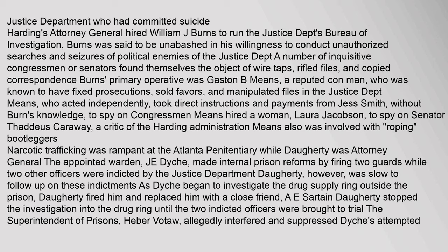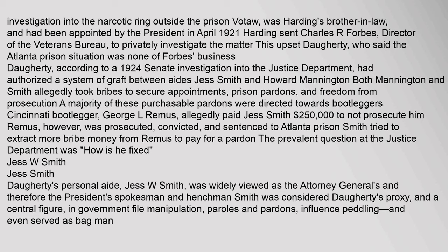Daugherty stopped the investigation into the drug ring until the two indicted officers were brought to trial. The superintendent of prisons, Eber Votaw, allegedly interfered and suppressed the attempted investigation into the narcotic ring outside the prison. Votaw was Harding's brother-in-law, appointed by the president in April 1921. According to a 1924 Senate investigation into the Justice Department, Daugherty had authorized a system of graft between aides Jess Smith and Howard Mannington. Both Mannington and Smith allegedly took bribes to secure appointments, prison pardons, and freedom from prosecution.